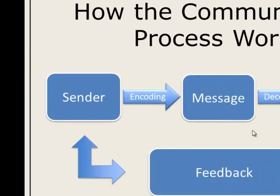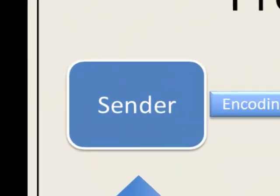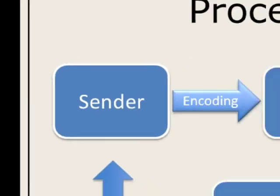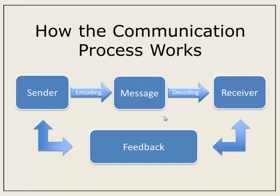The communication process starts with the sender. The sender is the person that is going to be transmitting a particular message. If we're going to communicate something, we have to decide what it is that we're going to communicate — but not only what, we also have to determine how we're going to communicate that, the means through which we're going to actually communicate the message. This includes everything from face-to-face or verbal communication, email or text, and a variety of other mediums. Written communication obviously would fall into this category.